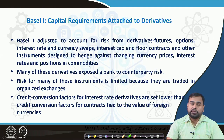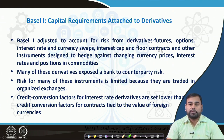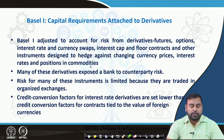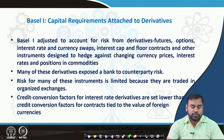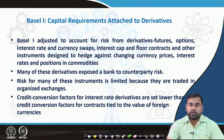Banks also hold other off-balance sheet items like derivatives. According to Basel 1, it was adjusted to account for risk from derivatives like futures, options, and swaps used to hedge against changing currency prices, interest rates, and commodity positions. Many derivative instruments expose banks to counterparty risk. The credit conversion factor for interest rate derivatives is always set lower than that for contracts tied to foreign currency values, because of the nature of the derivative contract.